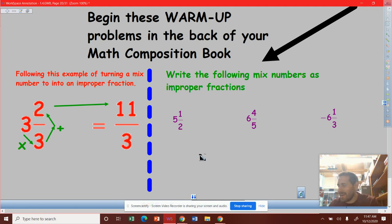So if that is the case, then what would 5 and 1 half equal? So 2 times 5 is 10. 10 plus 1 is 11. So we get 11 over 2.